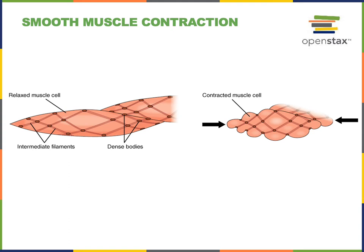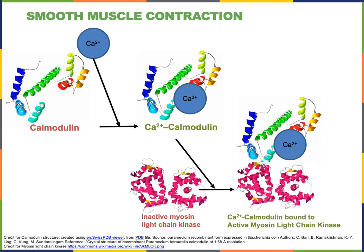Another important difference between smooth muscle and skeletal muscle is that smooth muscle does not contain the calcium sensor protein troponin. So, if there is no troponin in smooth muscle, how is excitation-contraction coupling going to work? How can we stimulate contraction of smooth muscle fibers without troponin?